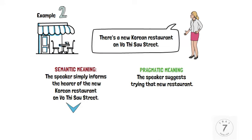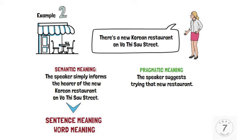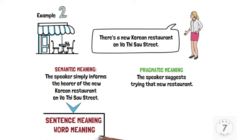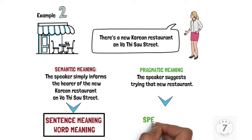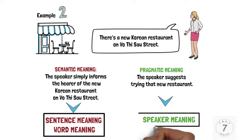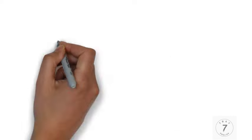In other words, we can say semantic meaning is the sentence meaning, or word meaning. It is what a sentence or a word means, or what it counts as the equivalent in the language concerned. Pragmatic meaning is the speaker meaning. It is what a speaker means, or intends to convey, when he uses a piece of language.